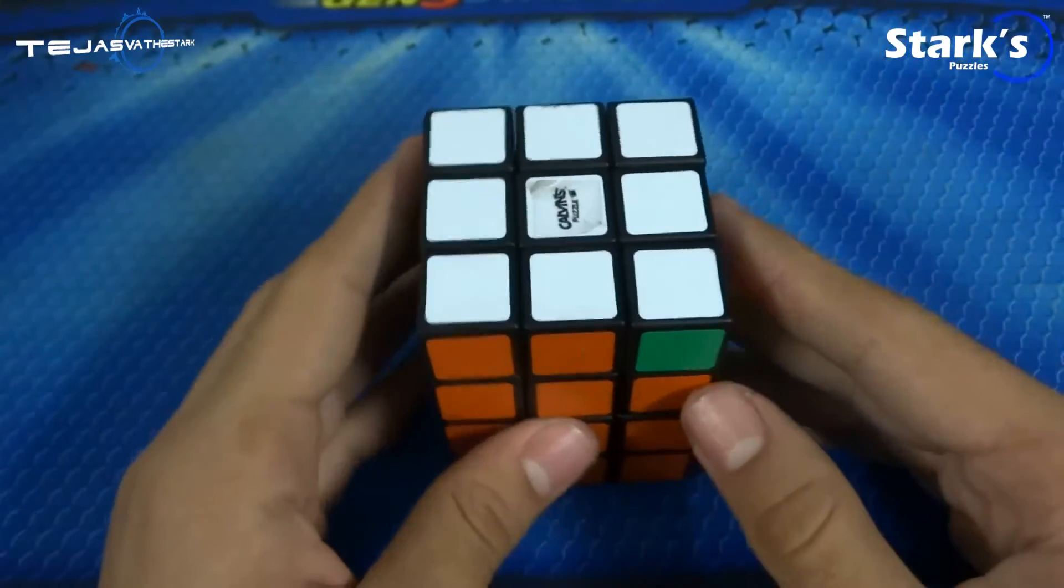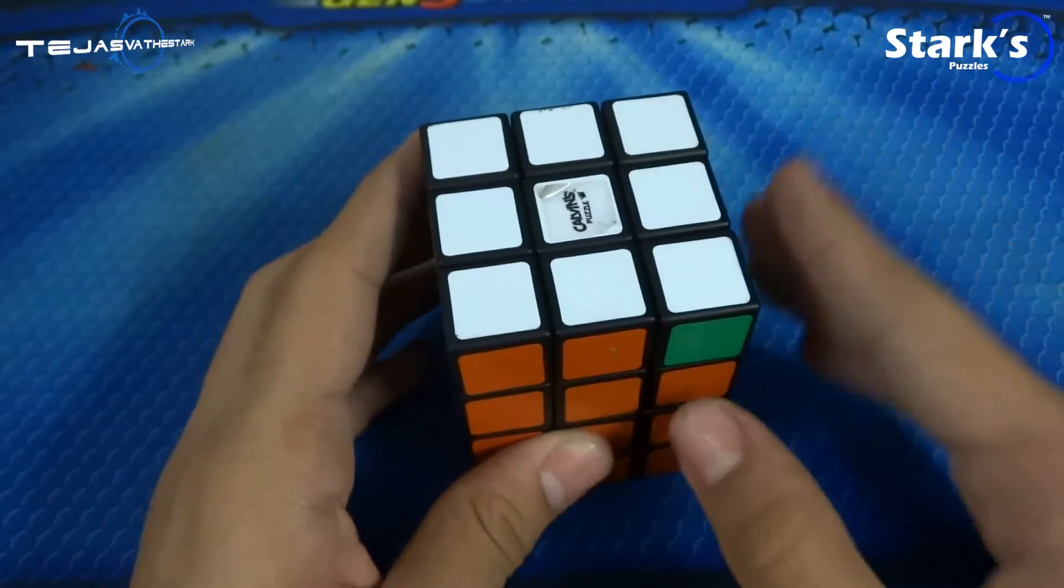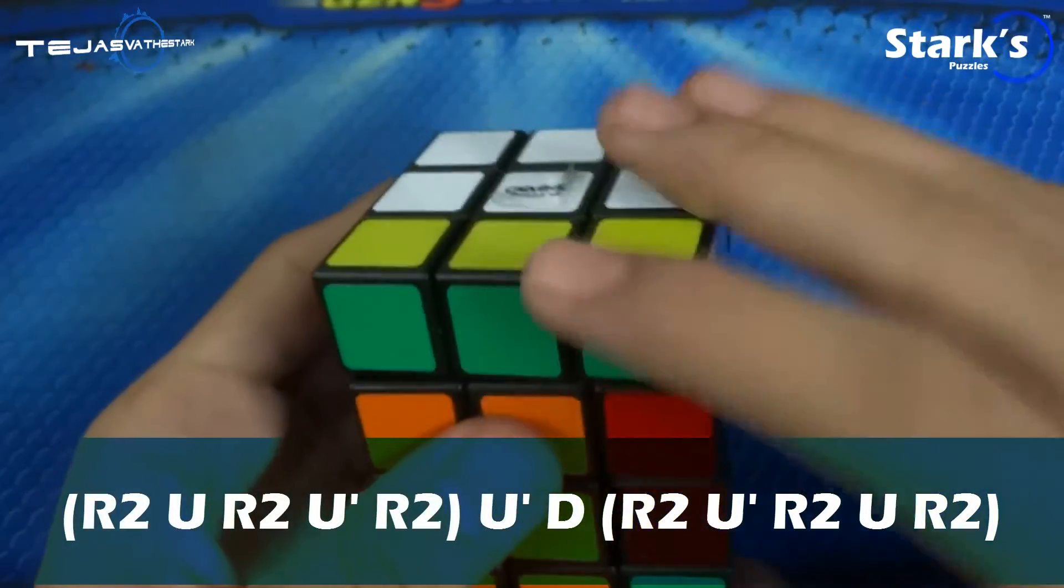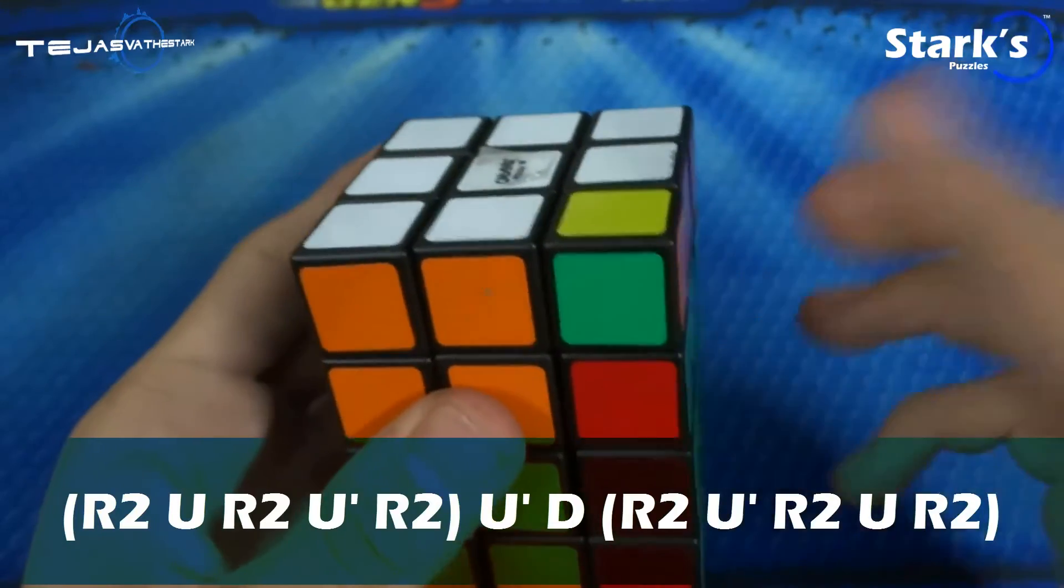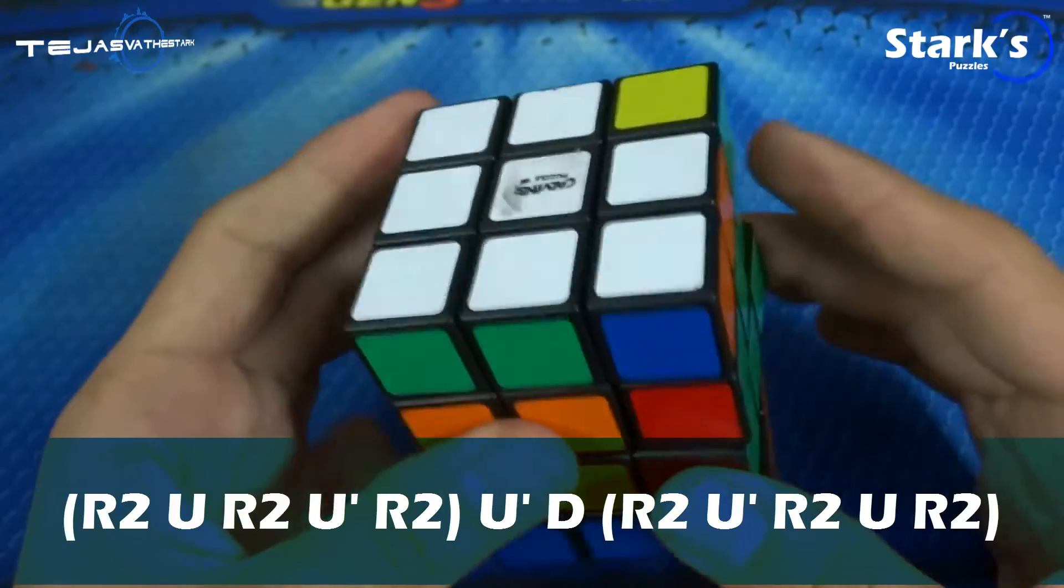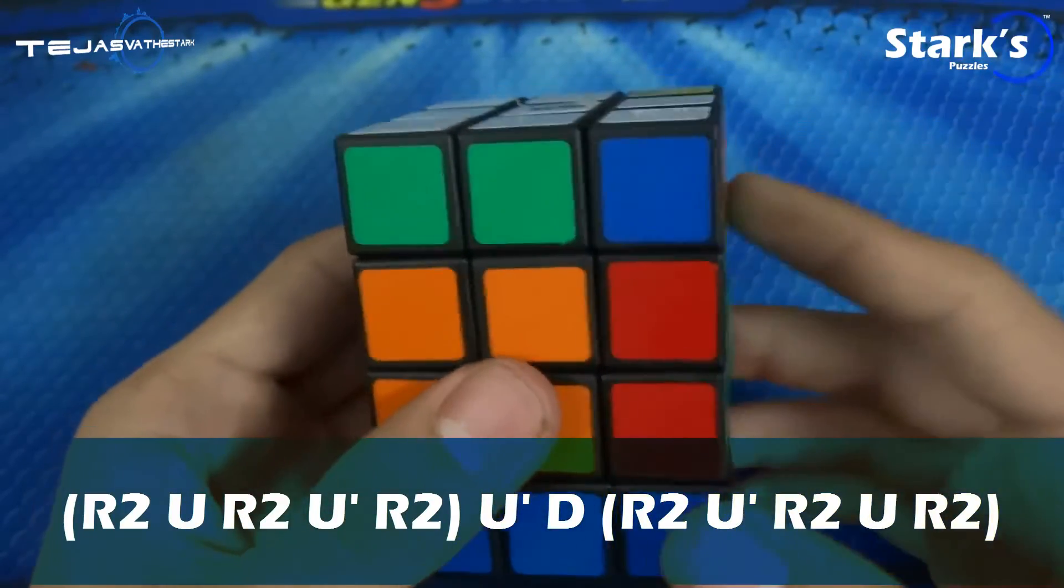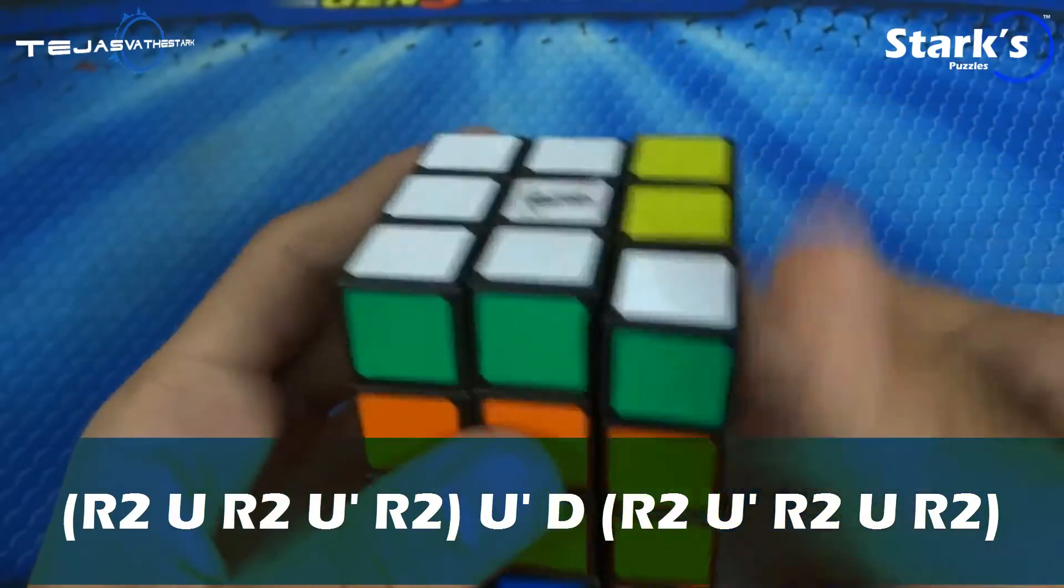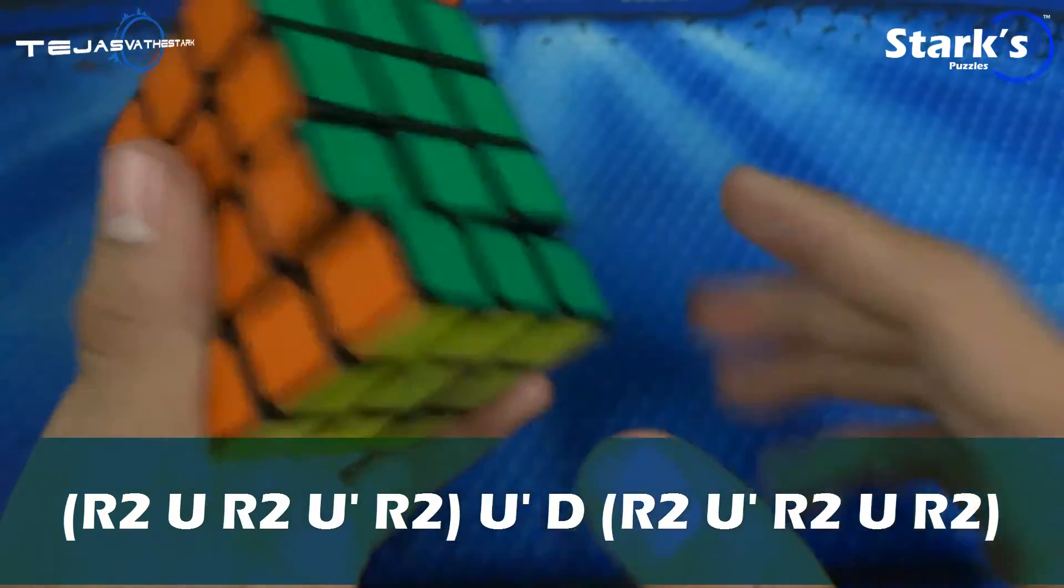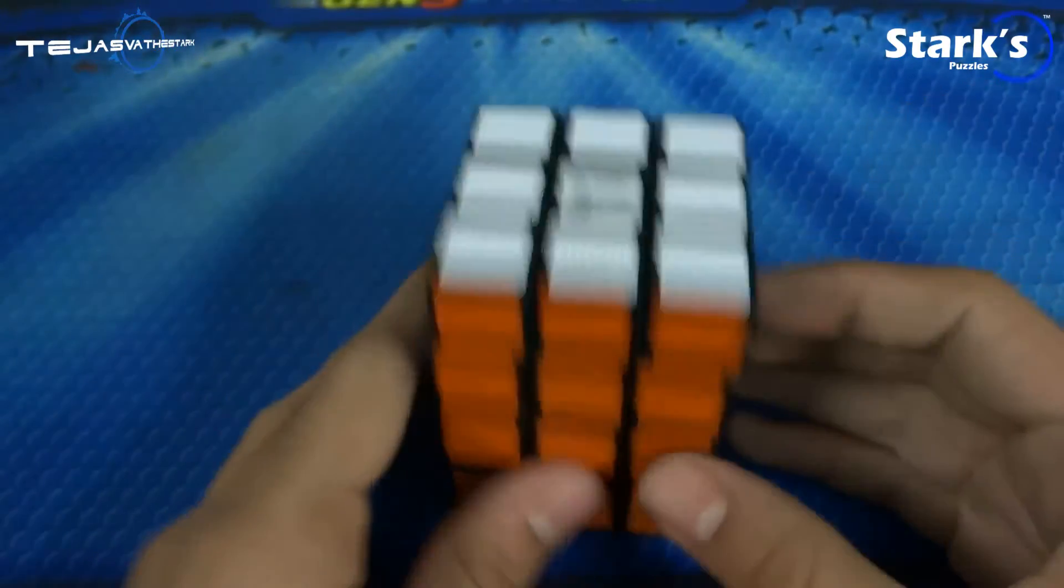It's actually pretty easy to learn if you notice properly. The first one is r2 u r2 u prime r2, that was the corner drop algorithm, and then you just do a u prime and d and then you do the reverse of the corner drop algorithm which is r2 u prime r2 u r2 and then you put that back again. So yeah, it's pretty simple.